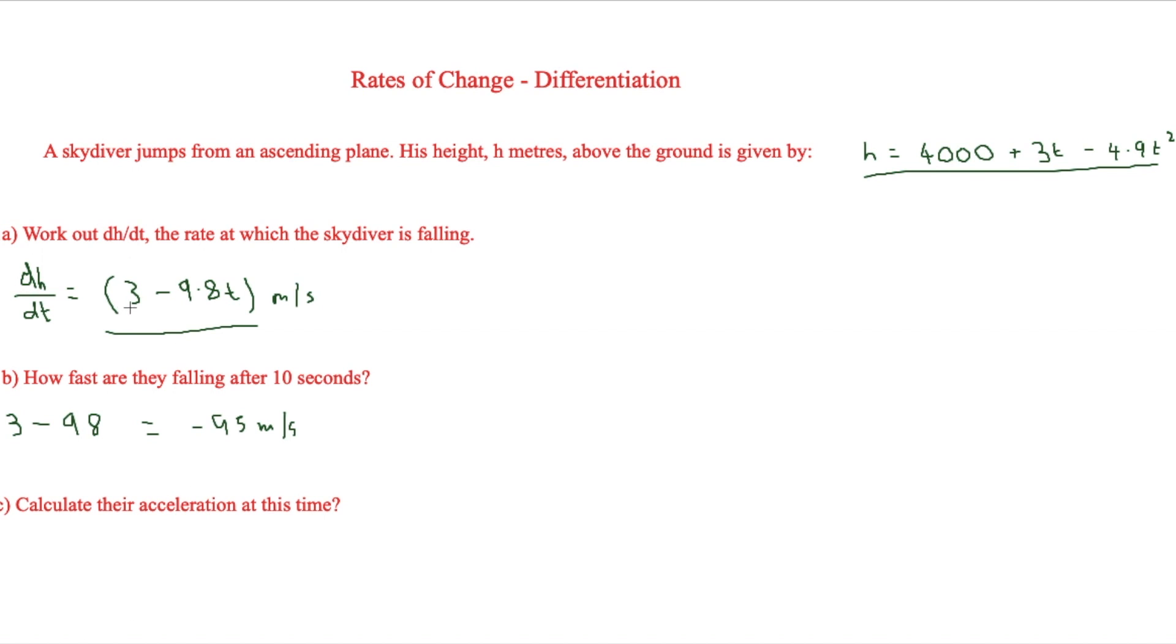So therefore, 3—the differential of 3 is nothing—and then minus 9.8t just goes to minus 9.8. And that's meters per second squared. And we could just write that as 9.8 meters per second squared towards the ground. And it's always this. It doesn't matter. It says at this time, but because there's no t in there, we don't need to do anything else.